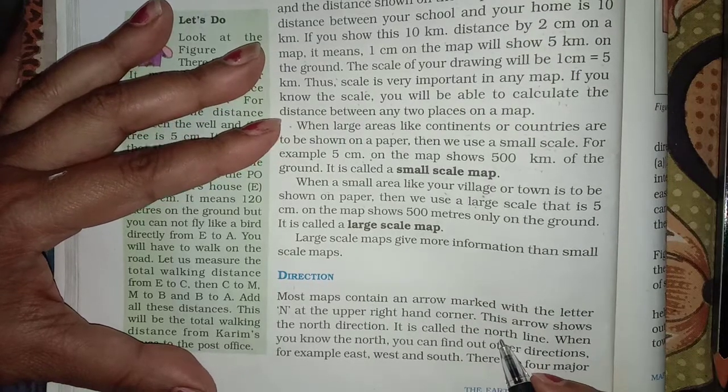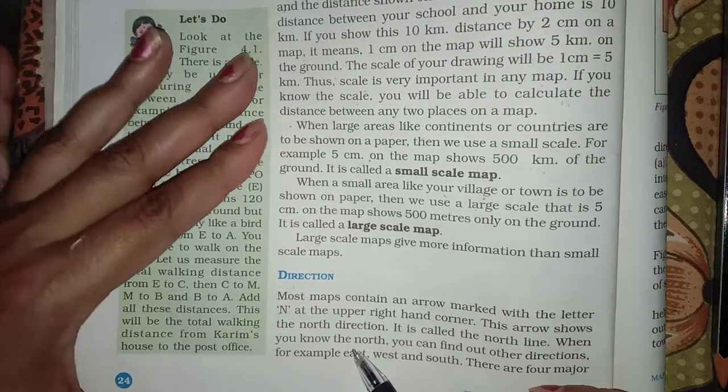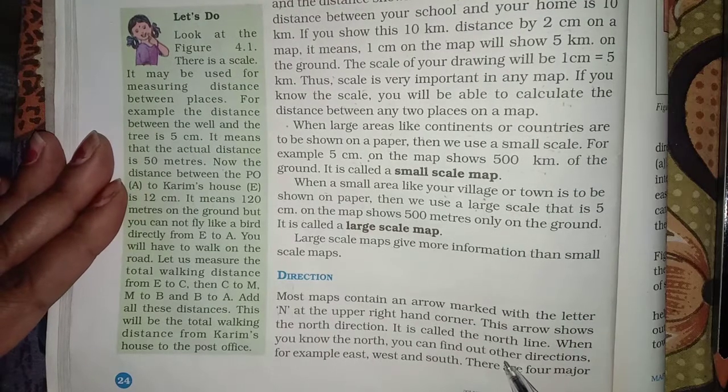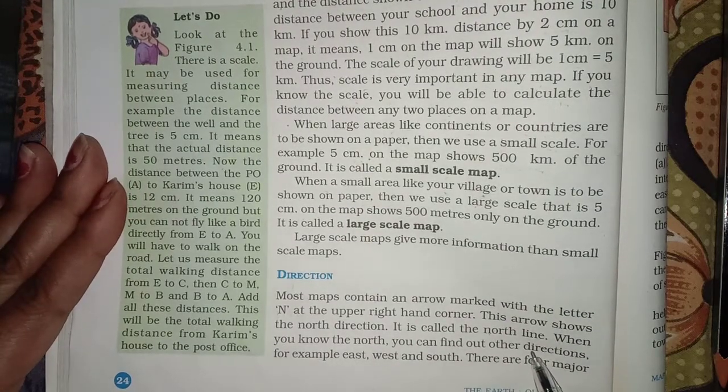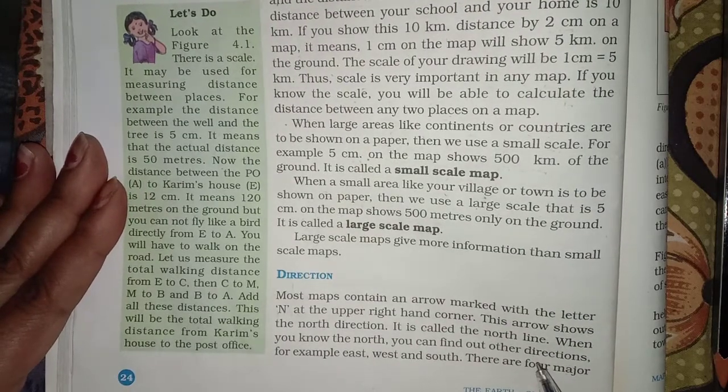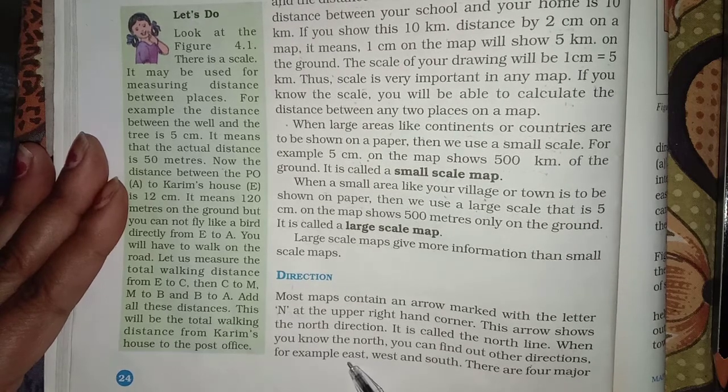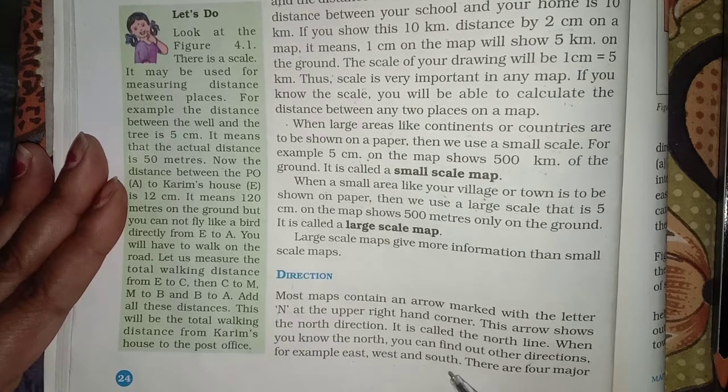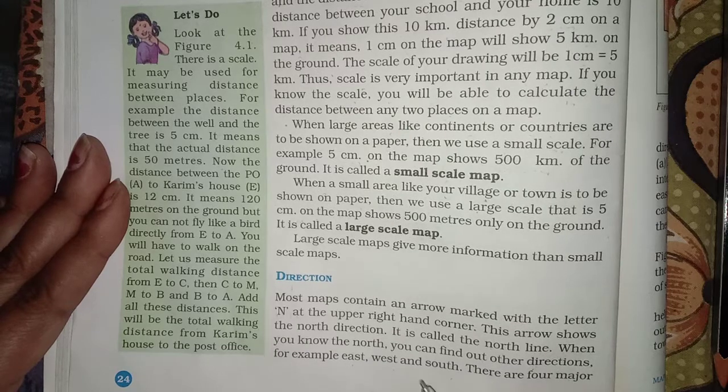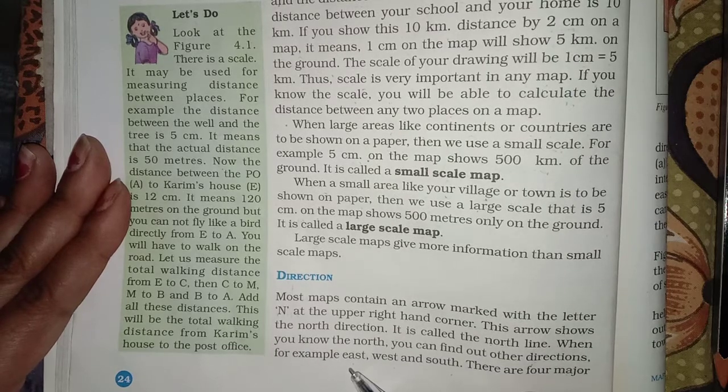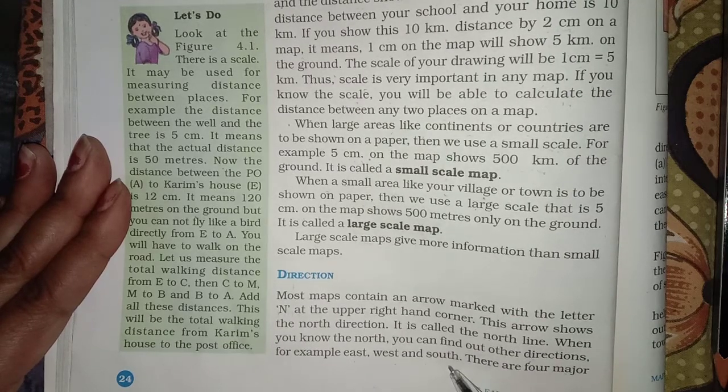It is called the north line. When you know the north, you can find out other directions. If you have north direction, you can find other directions, for example, east, west and south.